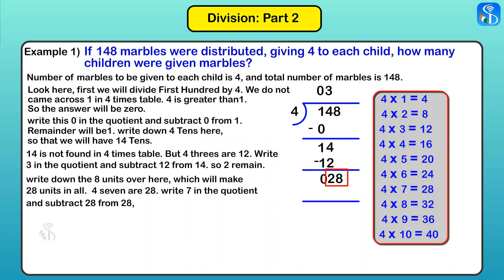This will make 28 units in all. 28 comes in the 4 times table. 4×7=28, so we will write 7 in the quotient and subtract 28 from 28. The remainder will be 0. The quotient is 37.